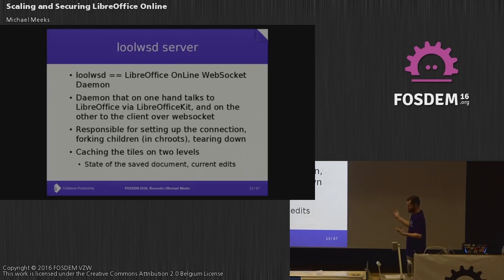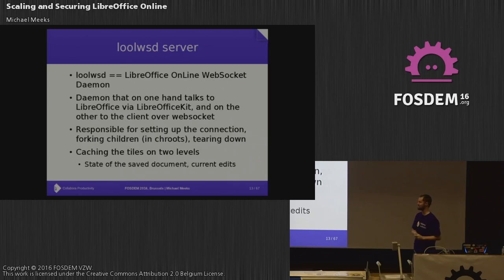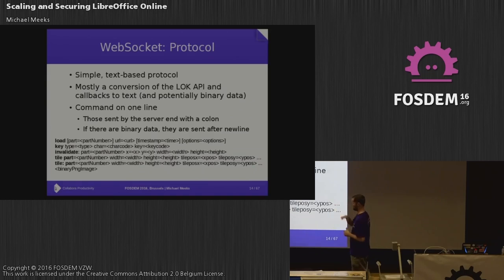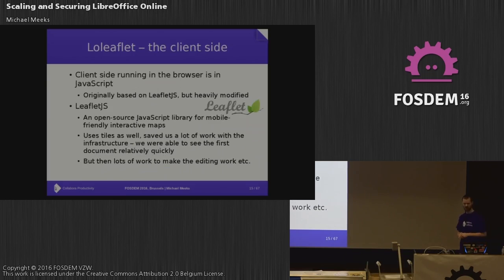There's a server daemon that manages and handles all the communication and caches the tiles. There are really two levels of cache — one is when you have the saved document and want to continue viewing it, and another is the editable version. We have a very simple protocol on top of WebSocket — a text protocol, astounding in its simplicity. You can load various pieces, pass URLs, invalidate areas to request re-rendering, fetch tiles, push key codes into the server. If you have a big binary blob, you send a newline and there it goes.